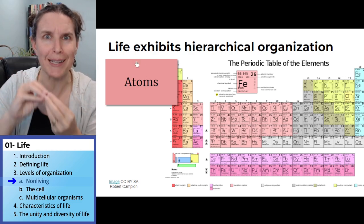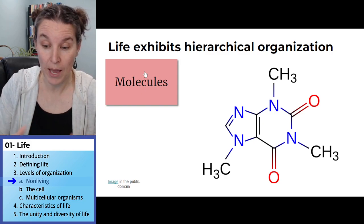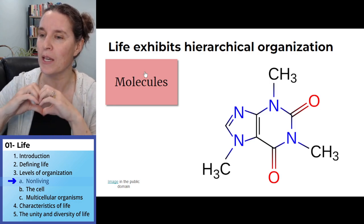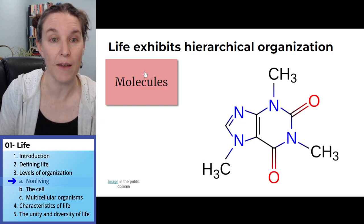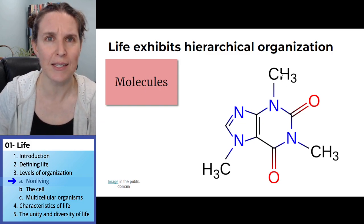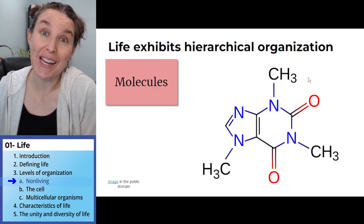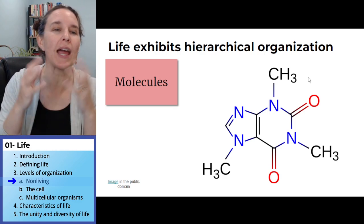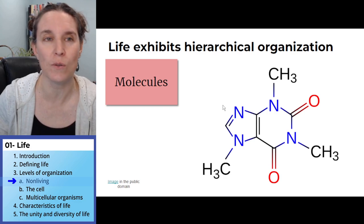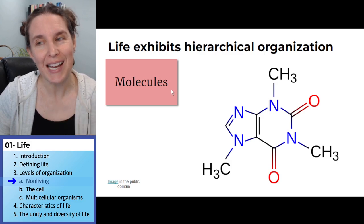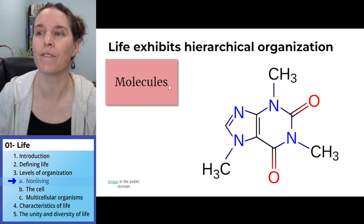Remember, atoms can be put together like Legos to build molecules, and molecules have structures and they have functions. Here is a molecule that is likely near and dear to many of our hearts — this is a molecule of caffeine. If you look carefully, you'll see a C, which represents a carbon atom. H3 represents three hydrogen atoms. We'll talk about this in grand, glorious detail in probably the next couple of lectures, and we get to dive into chemistry in lab.